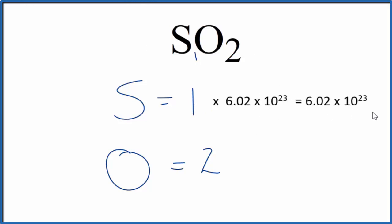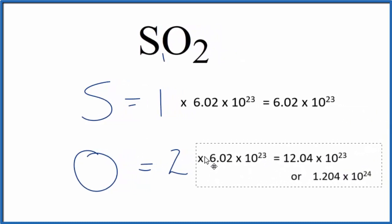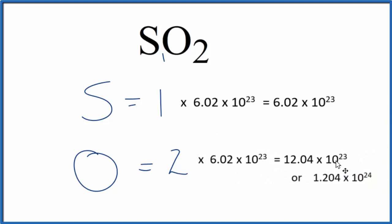And that'll give us 6.02 times 10 to the 23rd sulfur atoms. Likewise for oxygen we multiply two times Avogadro's number and that would give us this number here of atoms in one mole of SO2.